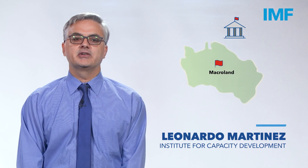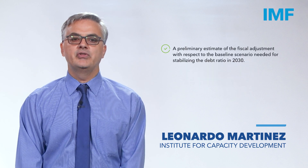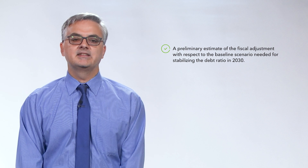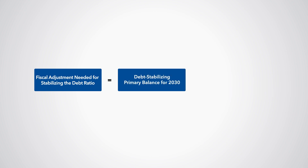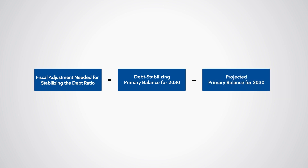The Ministry of Finance of Macroland asked you to present a preliminary estimate of the fiscal adjustment with respect to the baseline scenario needed for stabilizing the debt ratio in 2030. To do this, you can use the baseline scenario in the file DDT1. You can compute the fiscal adjustment needed for stabilizing the debt ratio as the debt stabilizing primary balance for 2030 minus the primary balance projected in the baseline scenario for 2030.